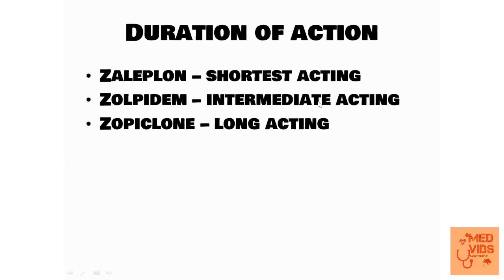Regarding duration of action: zaleplon is the shortest acting, zolpidem is intermediate acting, and zopiclone is the longest acting. A memory hack: arrange by the second letter alphabetically — 'a' in zaleplon comes first (shortest), then for the remaining two both have 'o', so look at the third letter: 'l' in zolpidem comes before 'p' in zopiclone, making zolpidem intermediate and zopiclone longest acting.